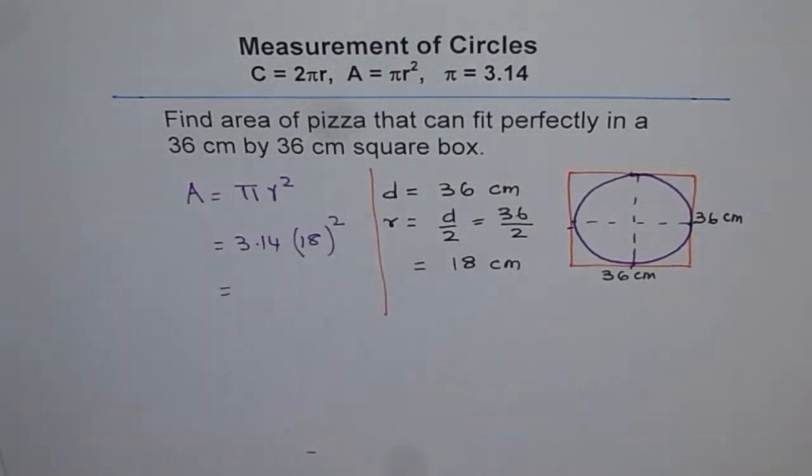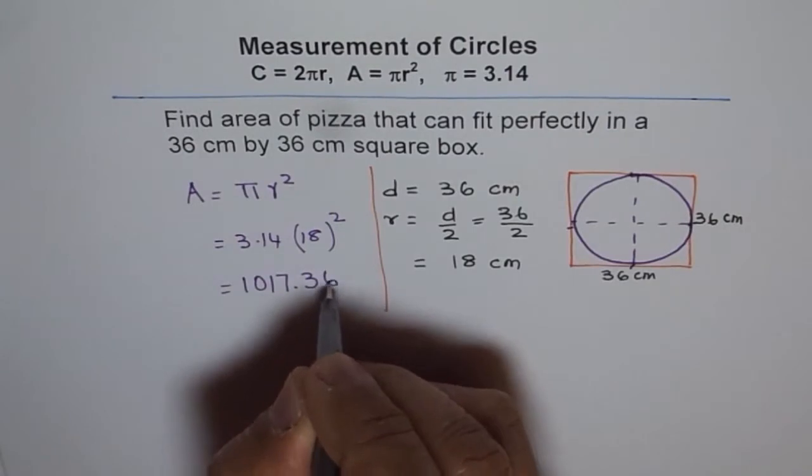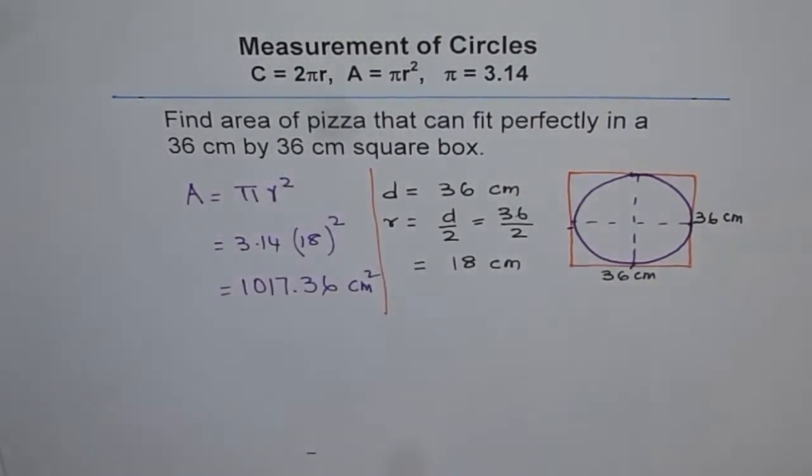Use the calculator to get the answer. 3.14 times 18 square gives us 1017.36 and the units are centimeter square.